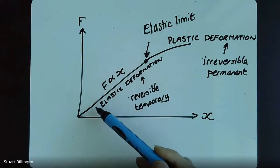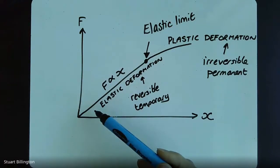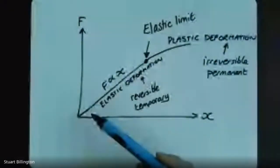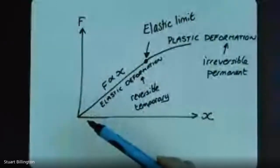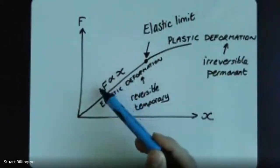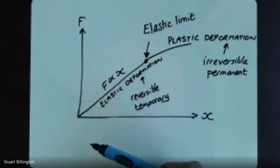As the atomic bonds flex, the atoms will either get a little bit further apart from each other or a little bit closer together. Either way, when we take away the force, the atoms revert back to their equilibrium positions - their bonds go back to their original lengths and the object goes back to the size it was. Because of the way atomic bonds work, applying twice as much force results in the bond stretching by twice the amount.